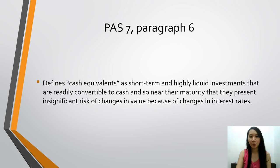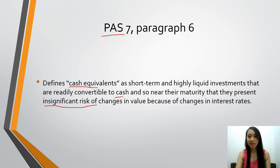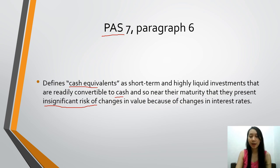First, let's discuss PAS 7, paragraph 9, or Philippine Accounting Standard 7, which defines cash equivalents as short-term and highly liquid investments that are readily convertible to cash and so near their maturity that they present insignificant risk of changes in value because of changes in interest rates. I highlighted 'readily convertible to cash.' These cash equivalents — most of these are treasury bills — are securities that can readily be converted to cash because they have very little risk from changes in interest rates.